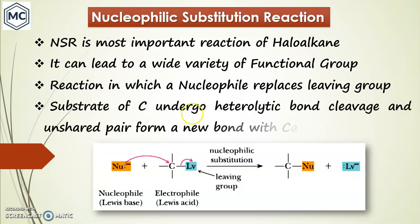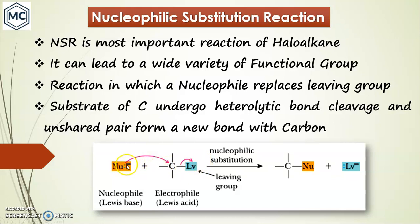In this reaction, a substrate carbon undergoes heterolytic bond fission. Then an unshared pair of electrons from the nucleophile forms a new bond with the carbon. So the nucleophile acts as a Lewis base, and this alkyl halide acts as the electrophile, that is a Lewis acid.